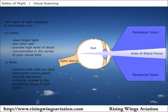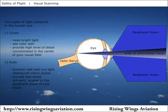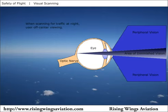As a result of this distribution of cones and rods, the area you see most clearly during the day becomes more or less a blind spot at night. In low-light conditions, we become more reliant on our peripheral vision. When scanning for traffic at night, you have a harder time seeing objects you are looking directly at. To most effectively scan for traffic at night, use your peripheral vision. This method of scanning is called off-center viewing.